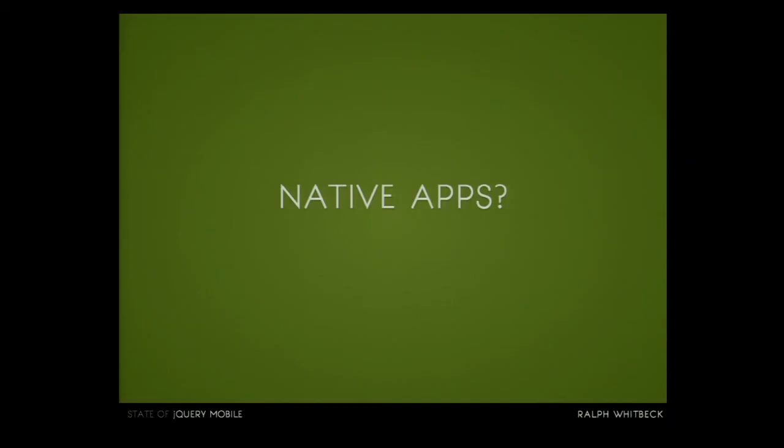Can jQuery Mobile build native apps? The answer is yes. You can build your application and we really love Cordova PhoneGap — wrap your application in that and you can tie into the native features of the phone, like the camera and the accelerometer. Then you can compile to different devices and send that to their stores. So we really have the ability to do both web applications as well as native applications.